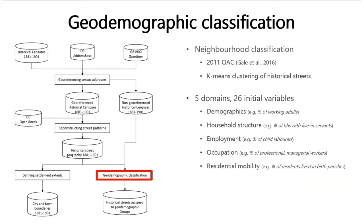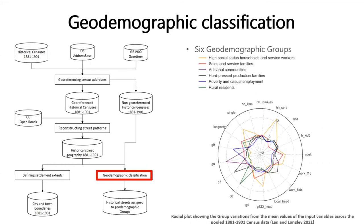Making use of the individual-level census records, we aggregate them into street level and apply geodemographic classification to our historical streets. It's a neighborhood classification method that groups neighborhoods according to their socio-demographic similarities, which has been widely used in the modern context, such as the 2011 UK census output area classification. The socio-demographic attributes used in our study are selected from five domains: demographics, for example the percentages of working adults; household structure; employment; and residential mobility, which is measured using the percentage of residents who live in their birth parishes.